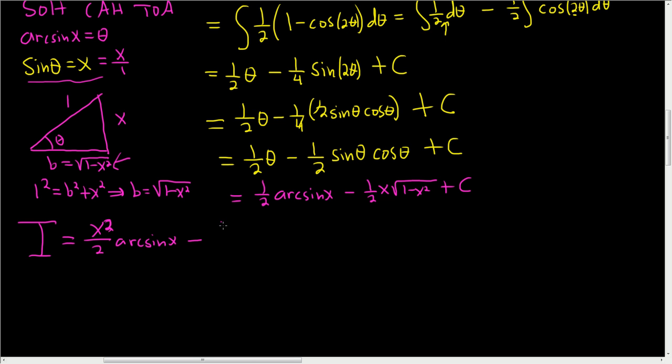Minus 1 half. And it's just what we just did. So 1 half arc sine x minus 1 half x square root 1 minus x squared. And then, you know what? I'll leave the c here just to show you what happens to it.